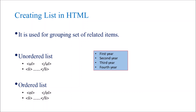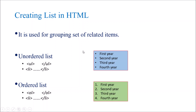Next is how to create a list in HTML. An unordered list has bullet points without numbering, while an ordered list has numbering — 1, 2, 3, 4. For an unordered list, use the ul tag as the container and li tags for each list item. For an ordered list, use the ol tag instead of ul. The li tag for list items is the same in both cases.